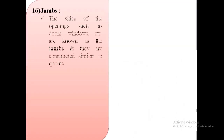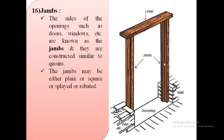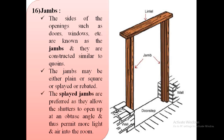The next term is jambs. The sides of the openings such as doors, windows, etc. are known as jambs, and they are constructed similar to quoins. As shown in the image, these are the jambs provided to the door. The jambs may be either plain/square, splayed, or rebated. Splayed jambs are preferred as they allow the shutters to open at an obtuse angle and thus permit more light and air into the room.